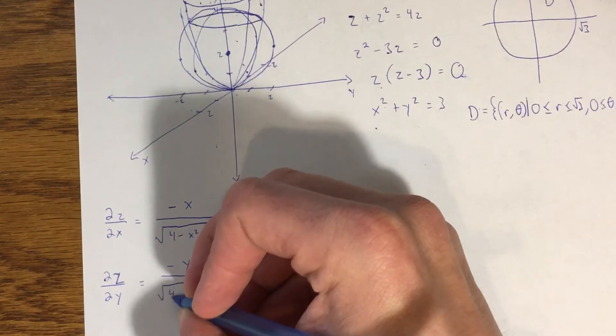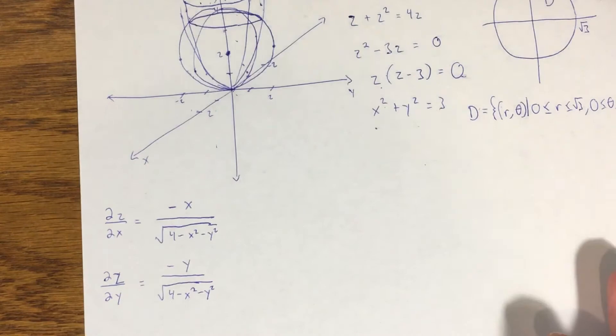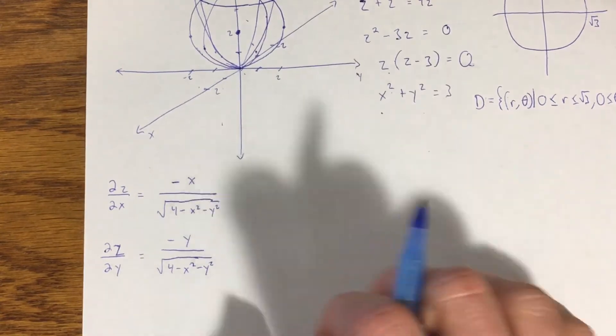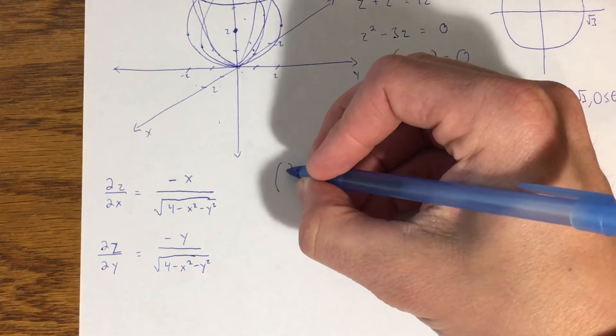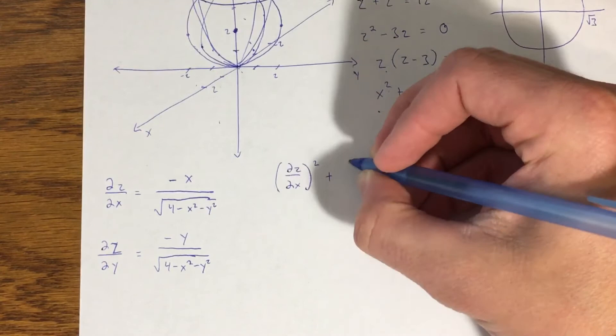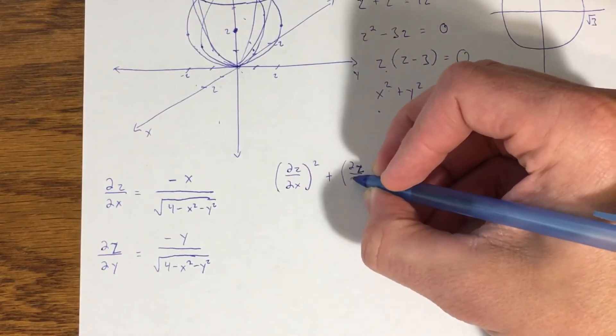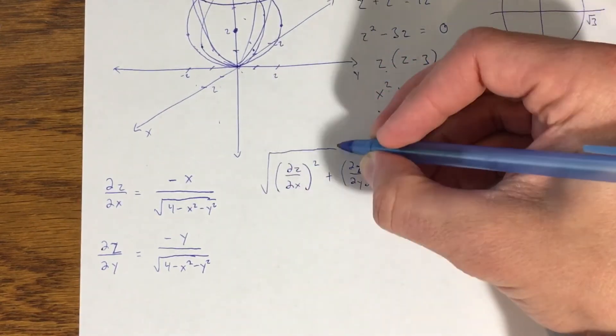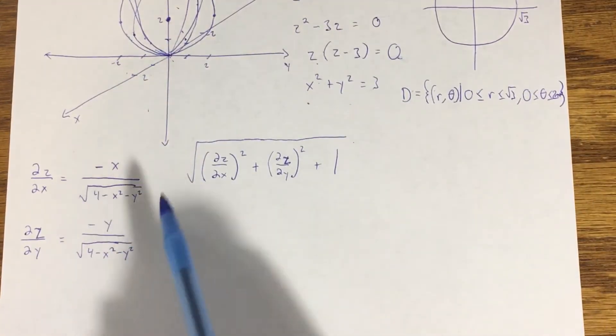Now for this problem, I'm going to set up my integrand off to the side to simplify things before taking it into an integral. Remember what we want is the partial of z with respect to x squared plus the partial of z with respect to y squared plus one, and then that whole thing is going to be under a square root.